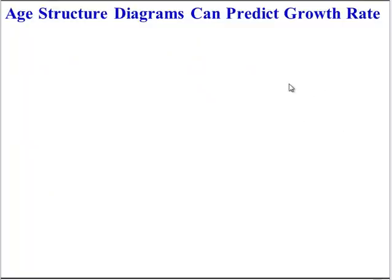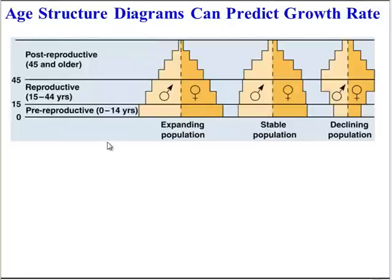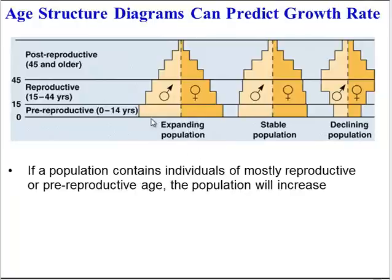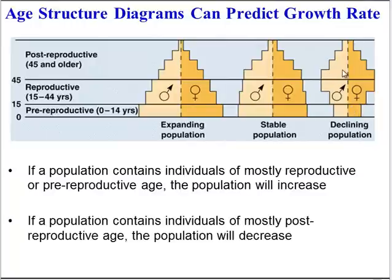We can also predict growth rate by looking at the age structure of populations. An age structure diagram shows the number of people in particular age groups, with men on one side and women on the other. A population with many people in the pre-reproductive years (0–14) and reproductive age (15–44) will increase, because most individuals are capable of, or will soon be capable of, having babies. A population with many older individuals will decrease. When there is a balance between old and young, the population may remain stable. That concludes our exploration of population dynamics.